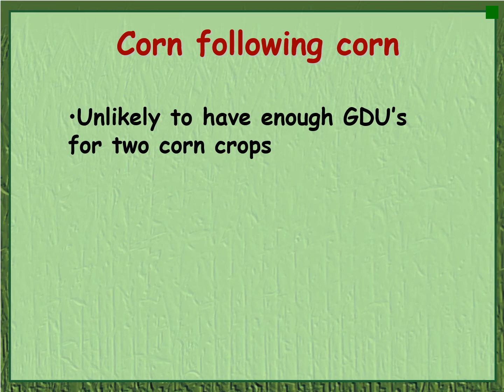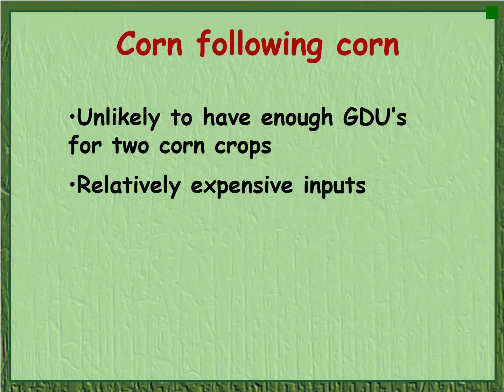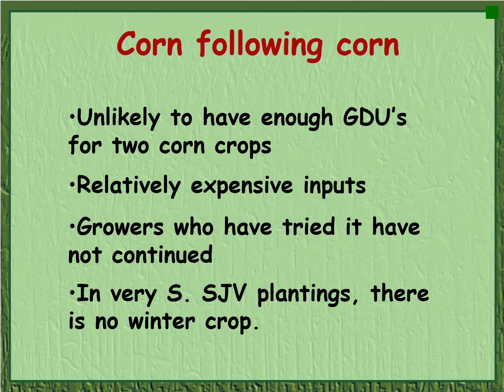Her conclusion was that for most plantings in the Modesto area of the San Joaquin Valley, it would be unlikely that you'd have reliably enough growing degree units for two corn crops. Her advice to farmers: you're probably not going to be able to do it with current genetics and current heat unit accumulation characteristics.